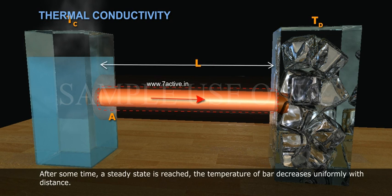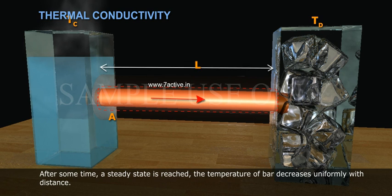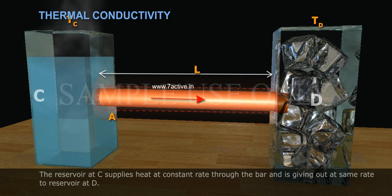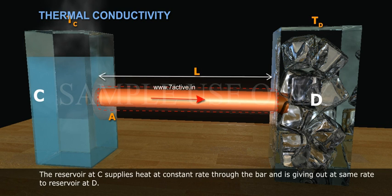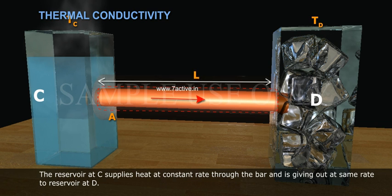After some time, a steady state is reached. The temperature of bar decreases uniformly with distance. The reservoir at C supplies heat at constant rate through the bar and is giving out at same rate to reservoir at D.